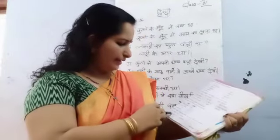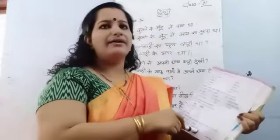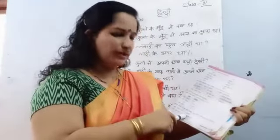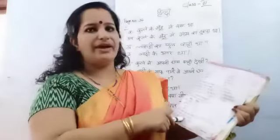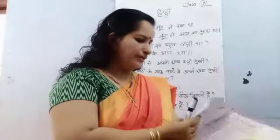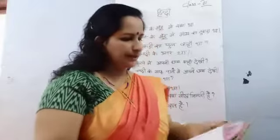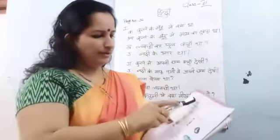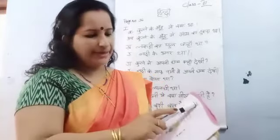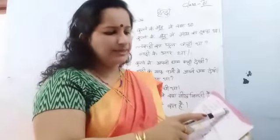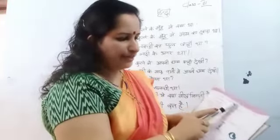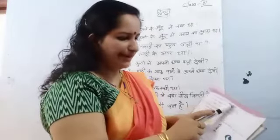Second one — Raam ka kutta hai. You have to use ka here because it is a pulling shabd (masculine gender). Next one — Mohan ki behen choti hai. Behen is striling (feminine) so you use ki. Mohan ki behen choti hai.